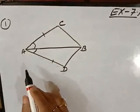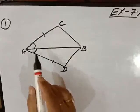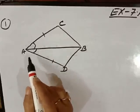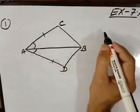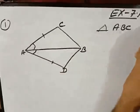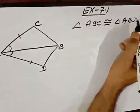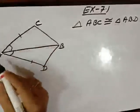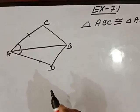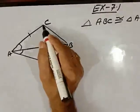In question number 1 it is given that ACBD is a quadrilateral and AB is a bisector of angle A. We have to prove that triangle ABC is congruent to triangle ABD. And one more question is given, what can you say about BC and BD?